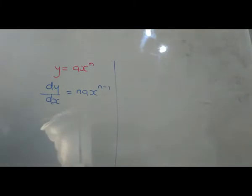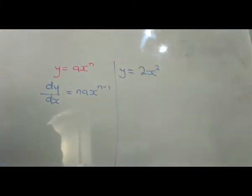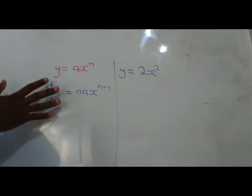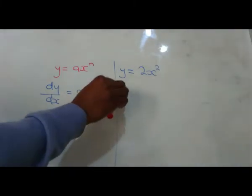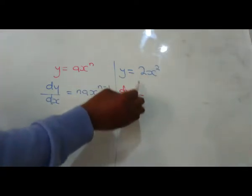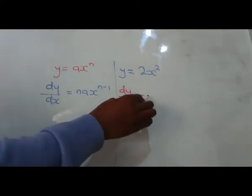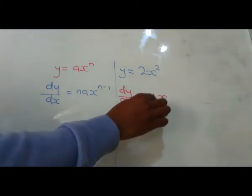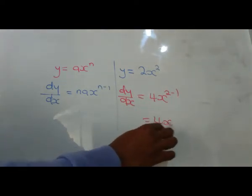Suppose you are given y equals 2x squared. How are you going to differentiate it? There we didn't use numbers, but now we're using numbers. So we'll say dy over dx is equal to 2 times 2, this power applied by the coefficient in x which is 2, so it gives you 4x. Then 2 minus 1 obviously you end up having 4x, so that is the answer.